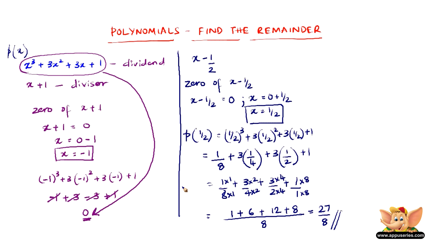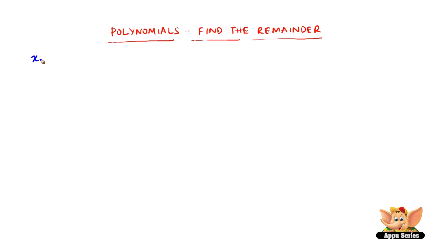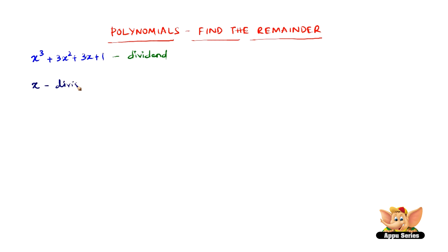Let us solve another problem. The dividend is x cube plus 3x square plus 3x plus 1, and the question is to find the remainder when divided by x. So x is the divisor now. Let us find the zero of x: equating x to 0, we get x equals 0.